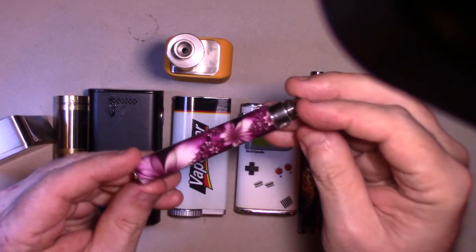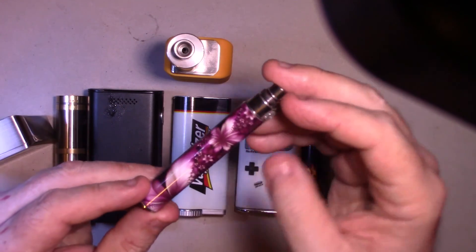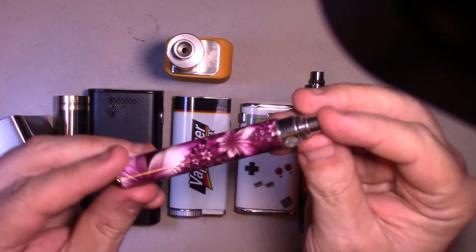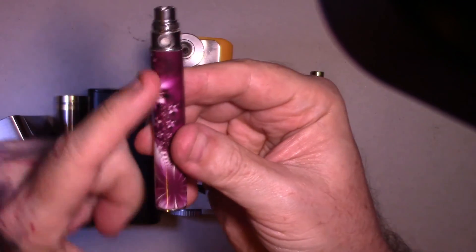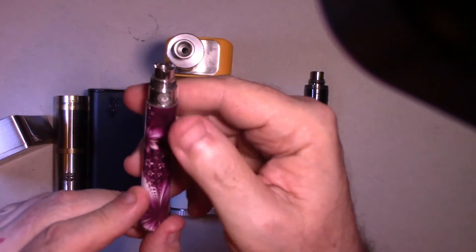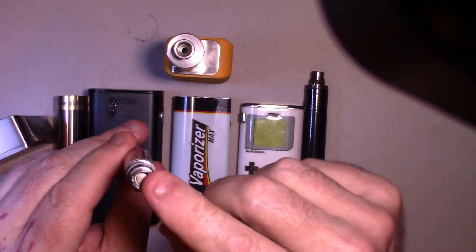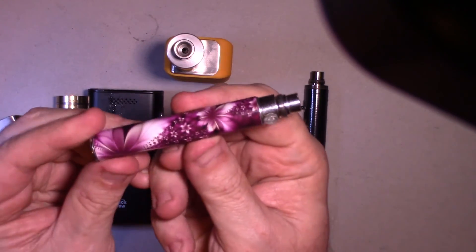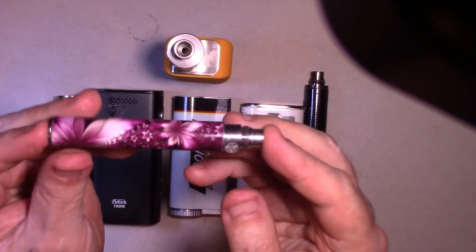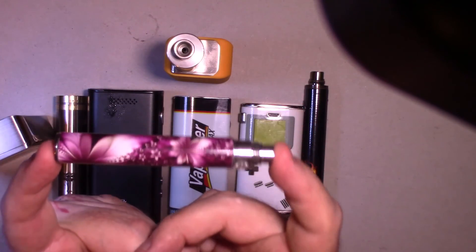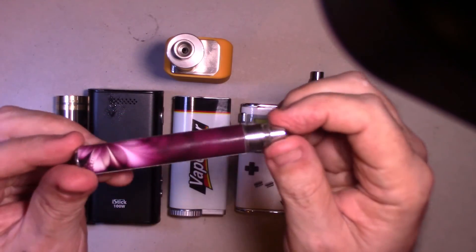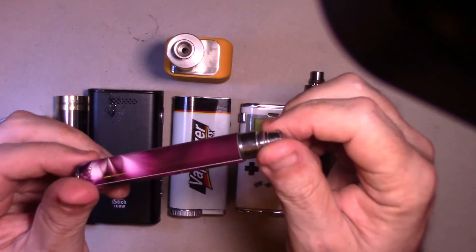First, we have the little pen mods. Now, the little pen mods are basically - this is a battery. It has a fire button, a connector to put a tank. Now, this is something that I started with. My wife and I both started at the same time, so we both started with these.